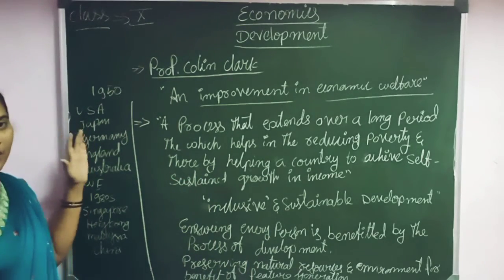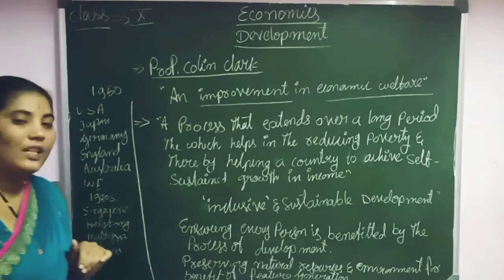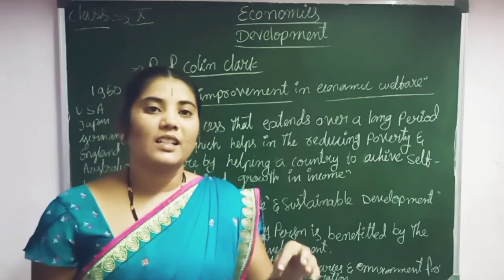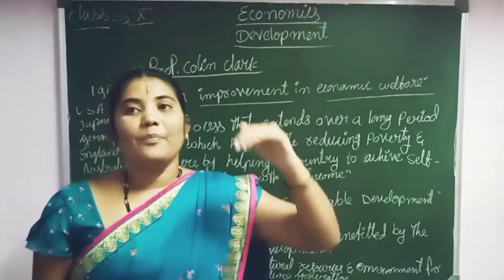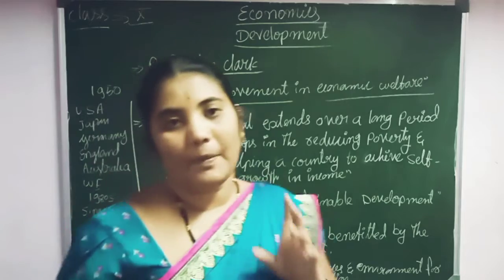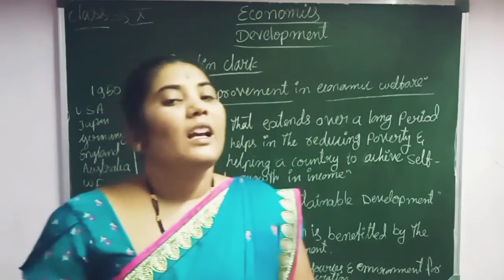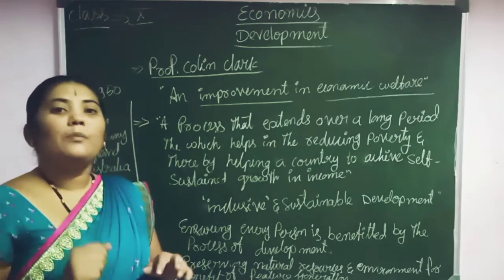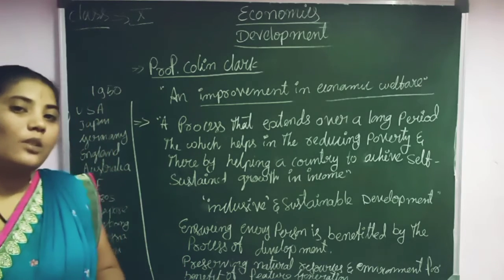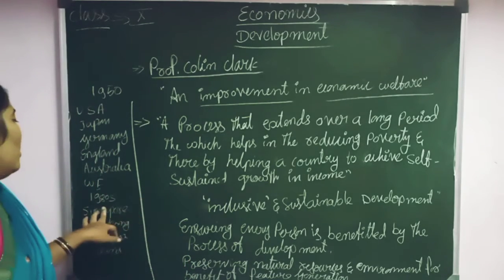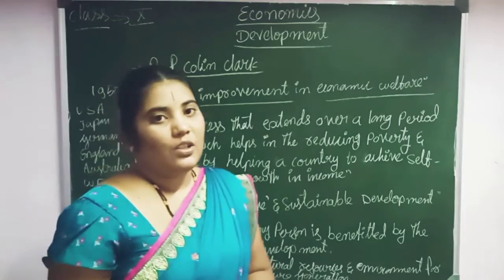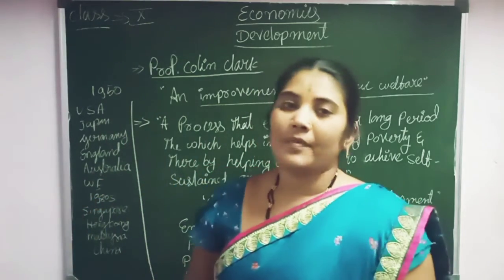Countries like USA, Japan, Germany, England, Australia, and Western Europe increased their national income over a very long period and are considered developed countries. But in the period of the 1980s, many more countries also continuously increased their national income. Those countries — Singapore, Hong Kong, Malaysia, and China — are also considered developed countries after the 1980s.